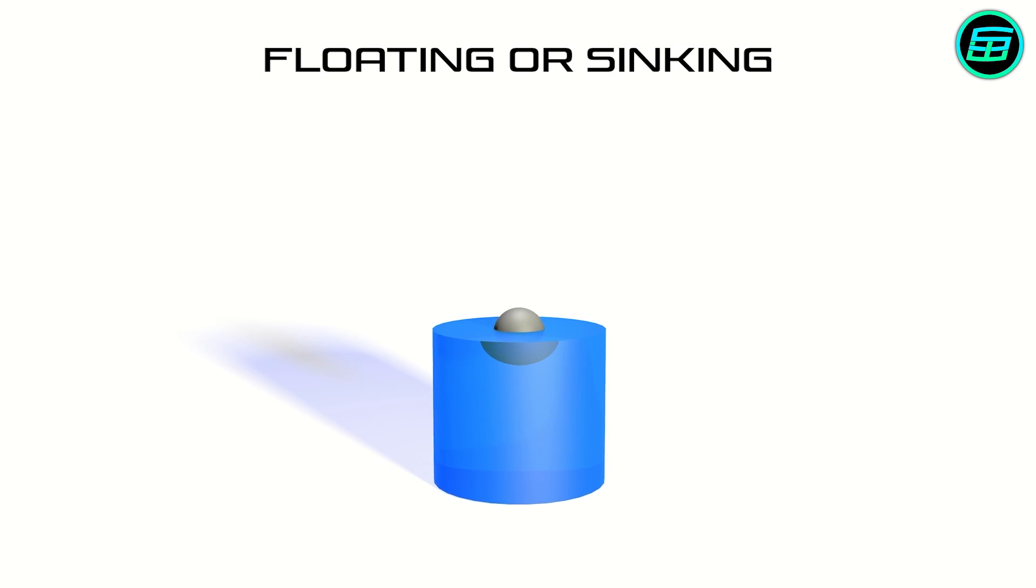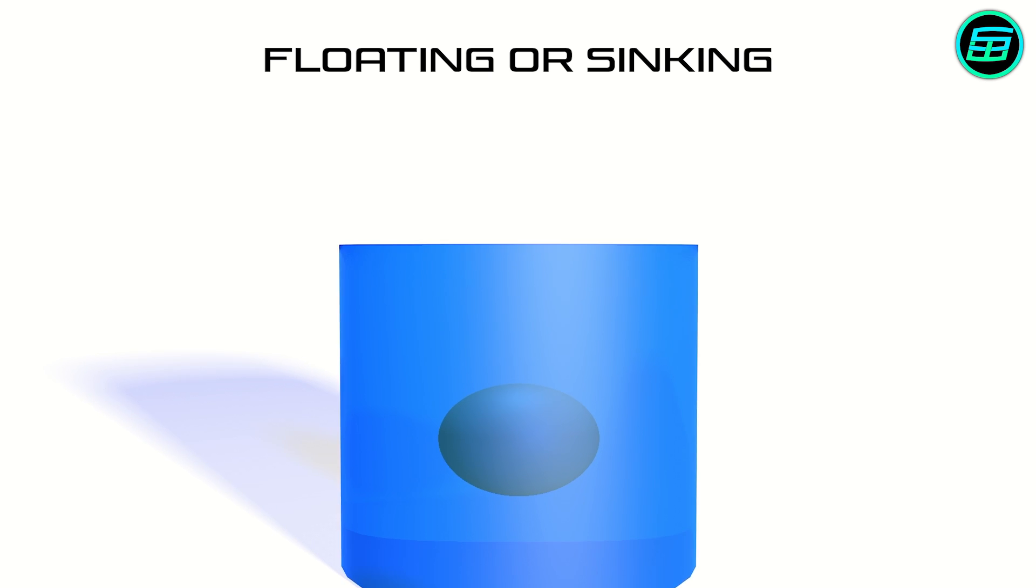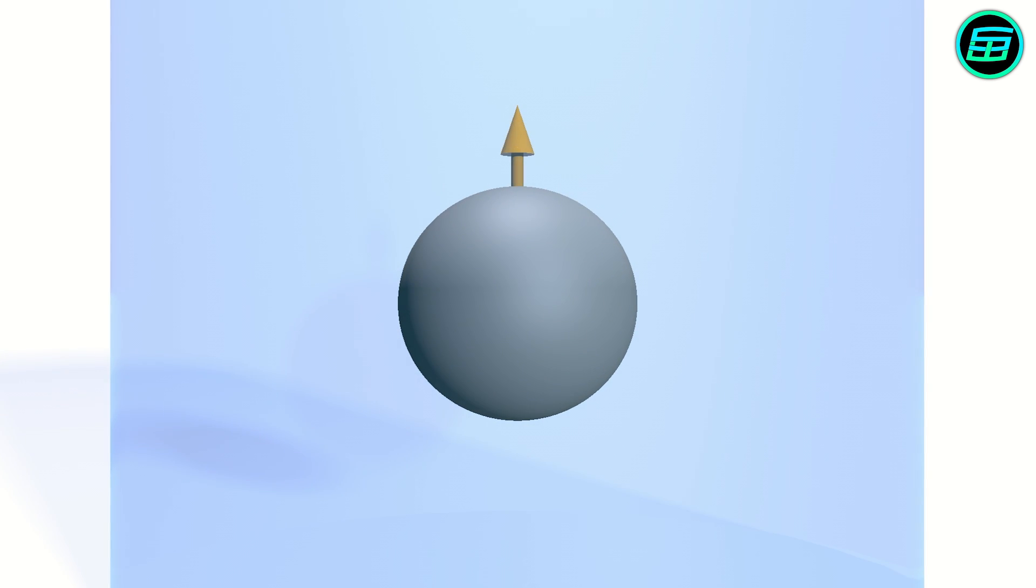Whether an object floats or sinks depends on two forces, the buoyant force of the fluid and gravity. The buoyant force is the upward force that a fluid exerts on an object, while gravity is the downward force.